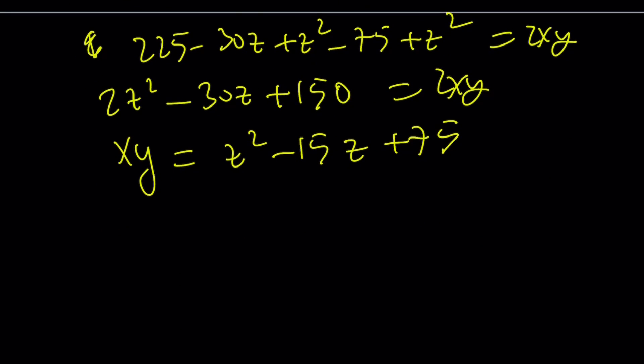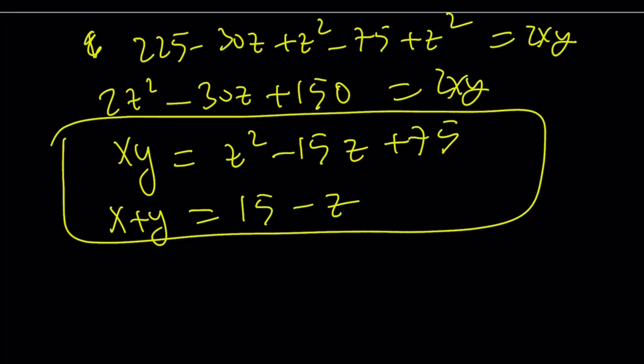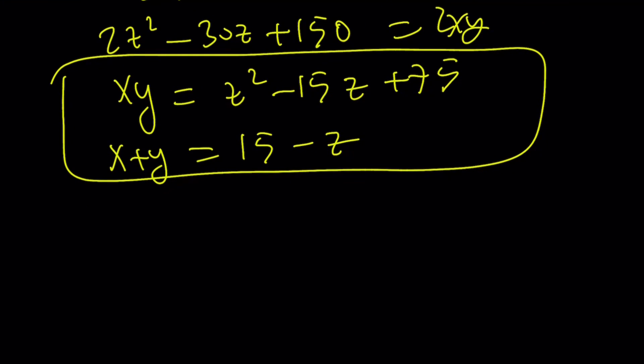Now, we're going to use Vieta's formulas. Because we know xy and we know x plus y. So we can kind of write the equation whose roots are x and y. Let's use a different variable like t. t squared minus 15 minus z times t plus z squared minus 15z plus 75. This is an equation whose roots are x and y. But notice that this is the opposite of the sum that comes in here, and this is the product from Vieta's formulas.